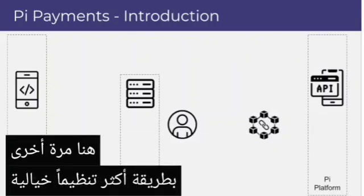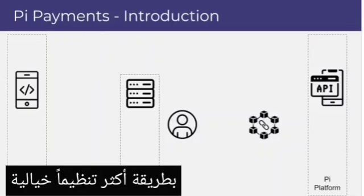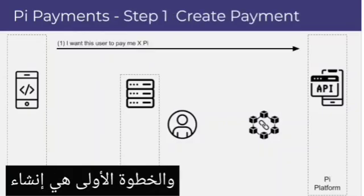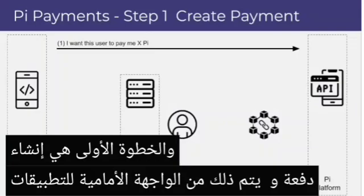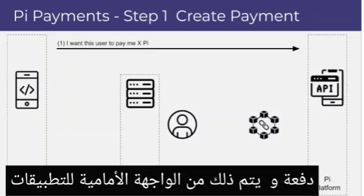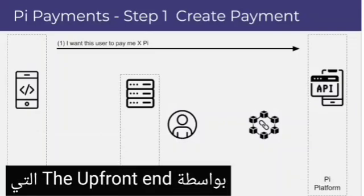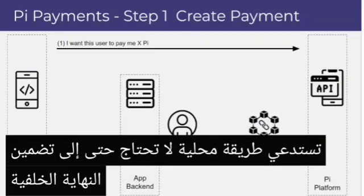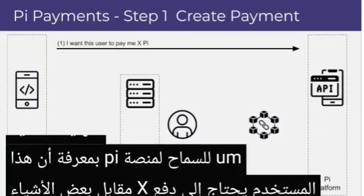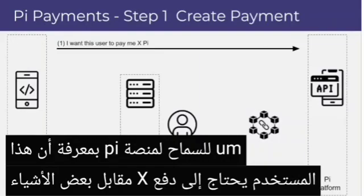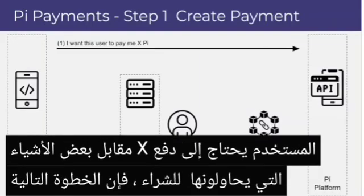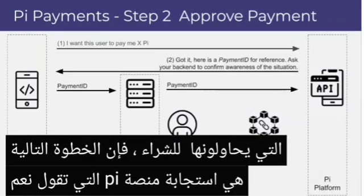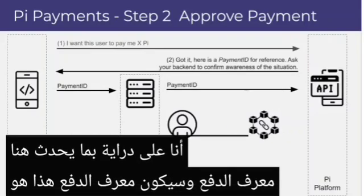Step one is creating a payment, and that is done from the app's front end by the app front end calling a local method that doesn't even need to involve the back end — to let the Pi platform know that this user needs to pay X Pi for something that they are trying to buy. The Pi platform responds saying it's aware of what's going on, and here's a payment ID.